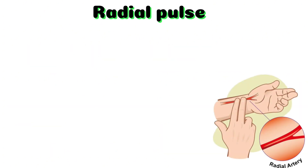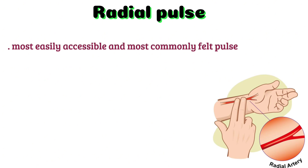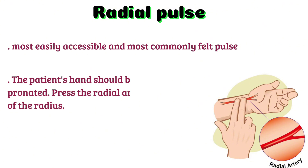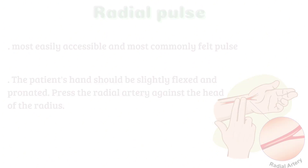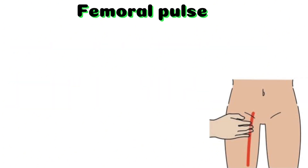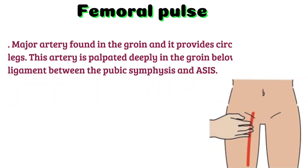Radial pulse: it is the most easily accessible and most commonly felt pulse. The patient's hand should be slightly flexed and pronated; press the radial artery against the head of the radius.